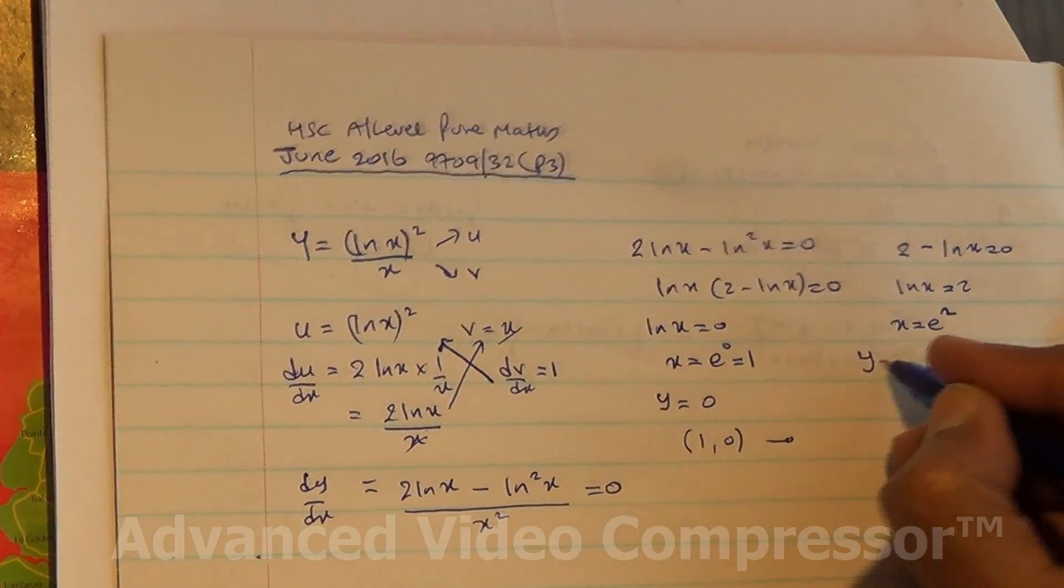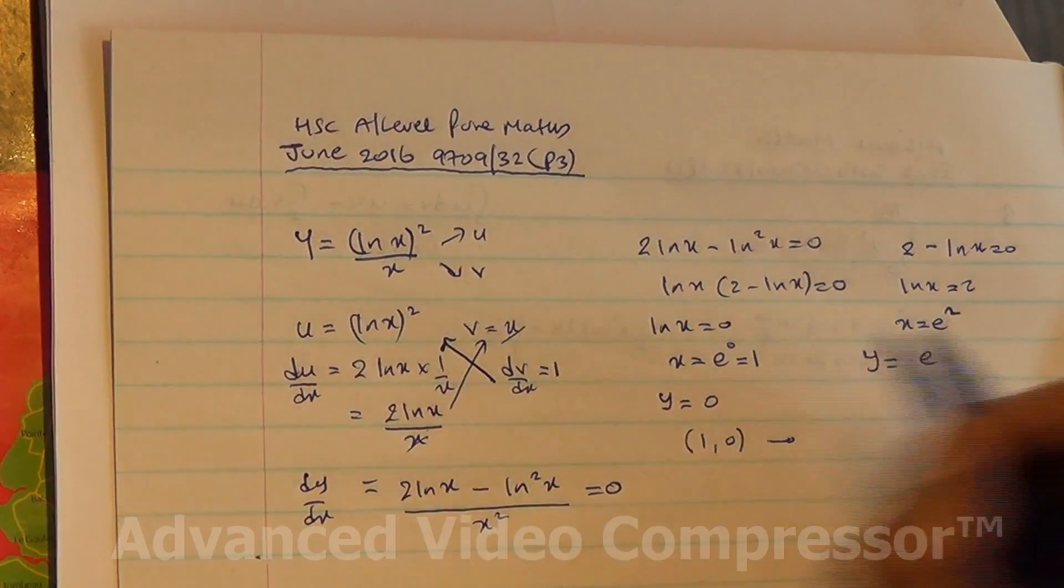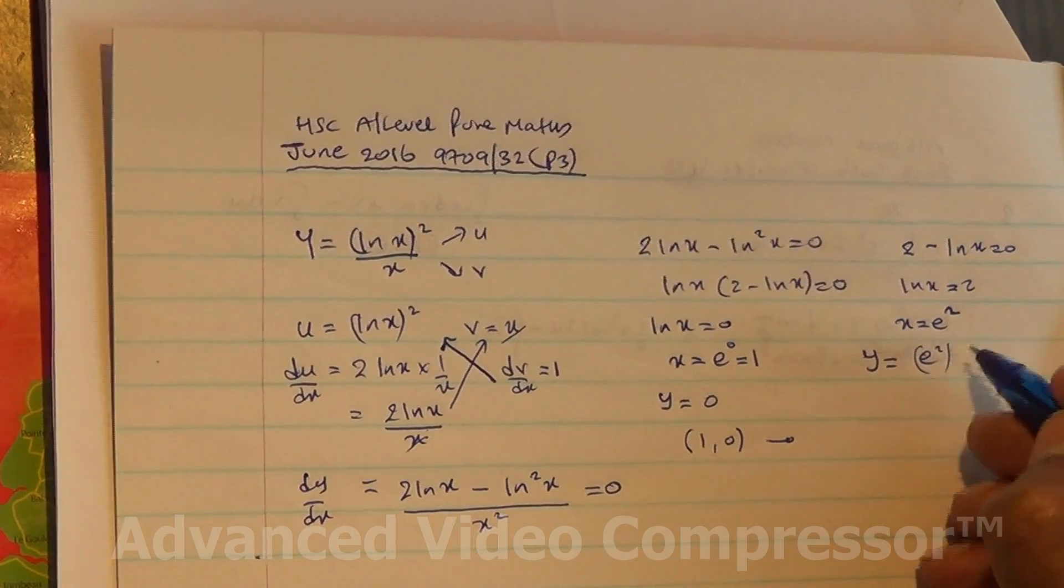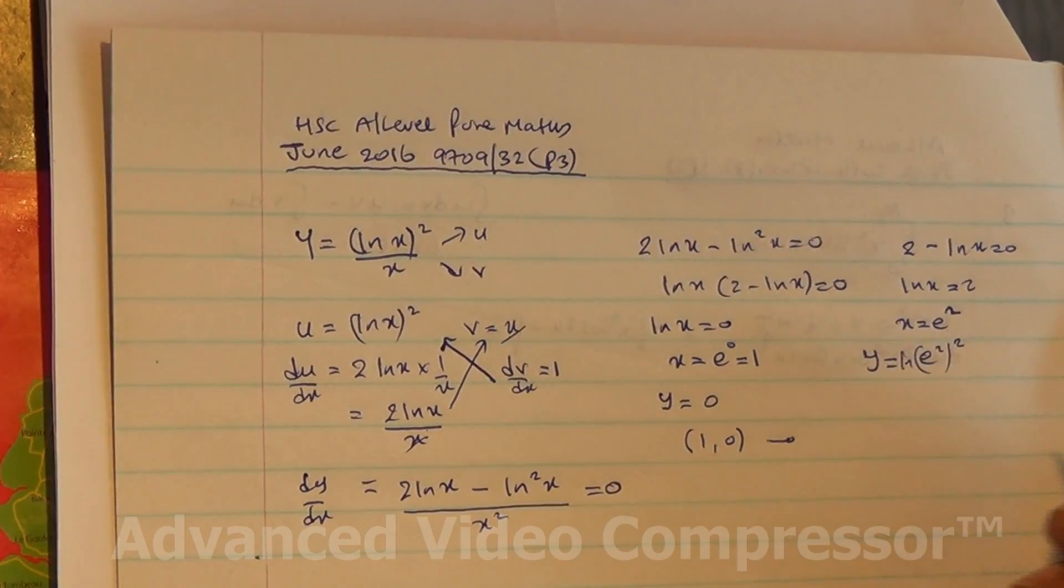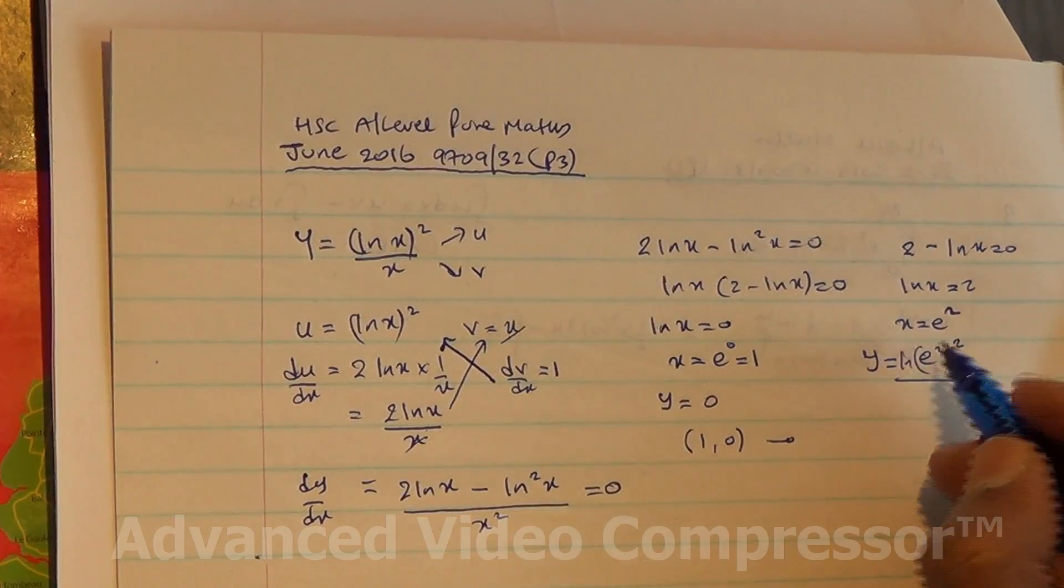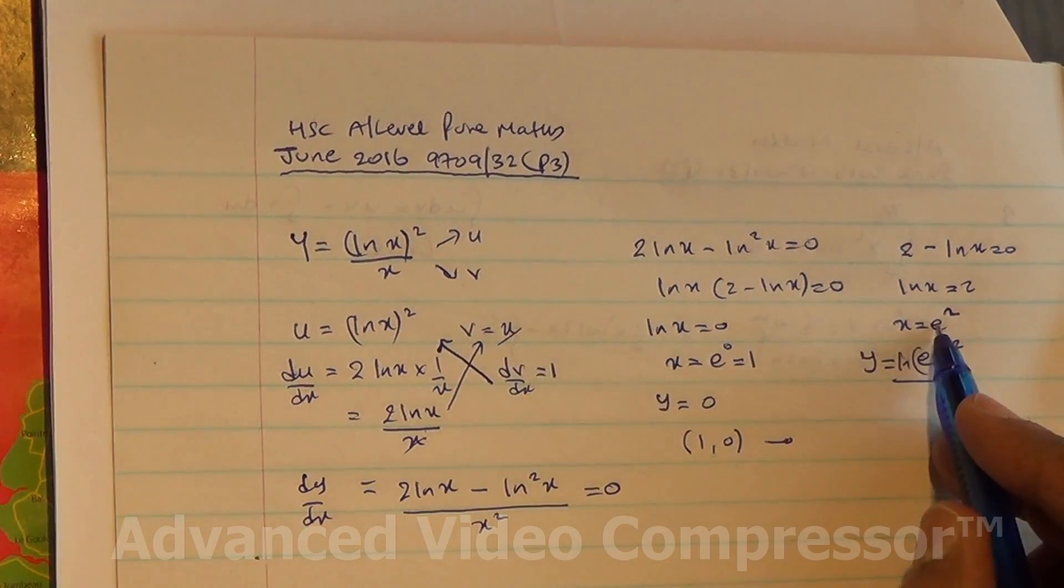So y equals (ln e²)² divided by e². That's ln e² all squared over e².